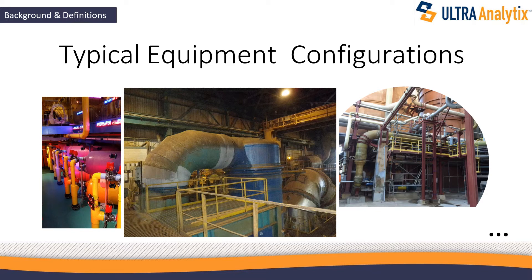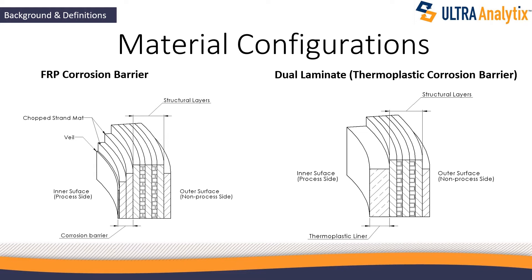Typically, FRP is used in a lot of different configurations and innumerable applications in the world. The pictures on the left here are from a water treatment facility. In the center, we're in a facility that handles a lot of hydrochloric acid and hydrochloric acid vapor. And from here, we're showing a pulp mill. There are a number of other applications, from municipal wastewater facilities all the way up to handling extremely hazardous chemicals.